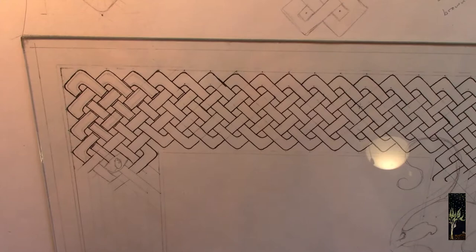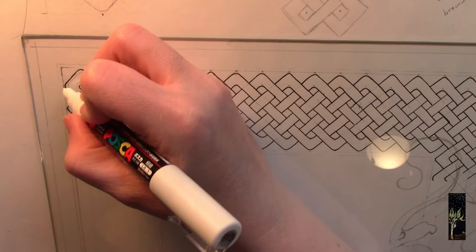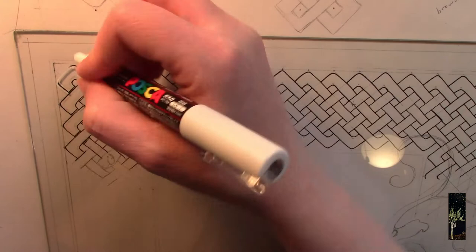So I'm gonna start painting in the knotwork and for this the outlines it's a lot easier to use, at least for me, a fine point marker pen, paint pen instead of using paints on a brush.